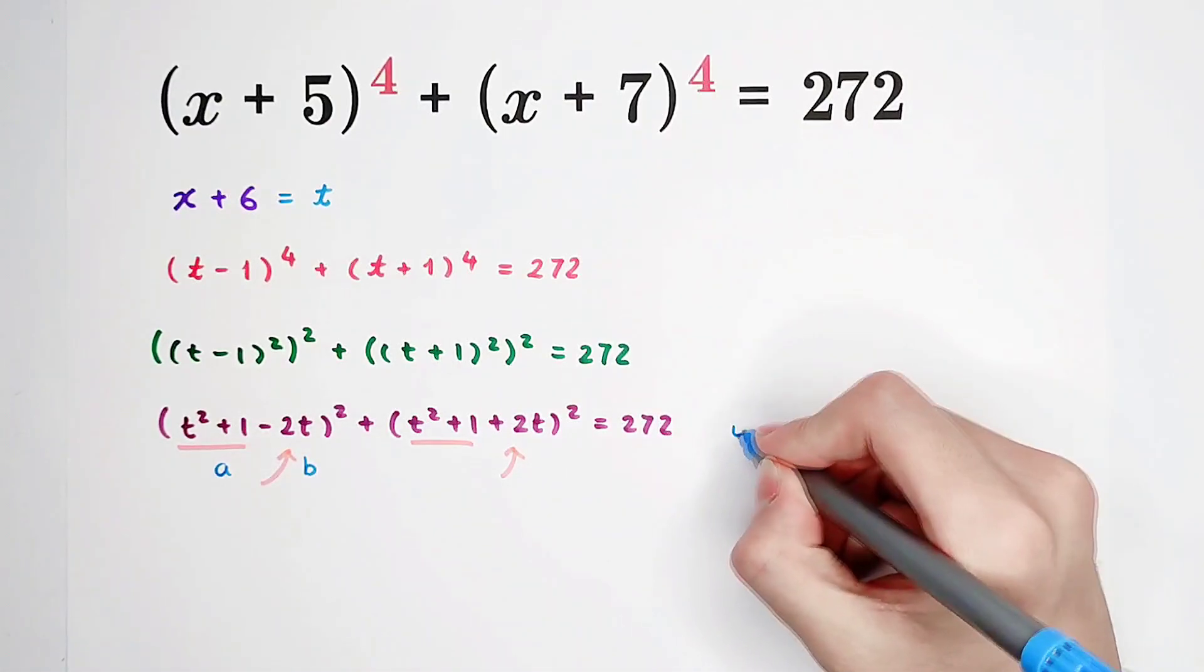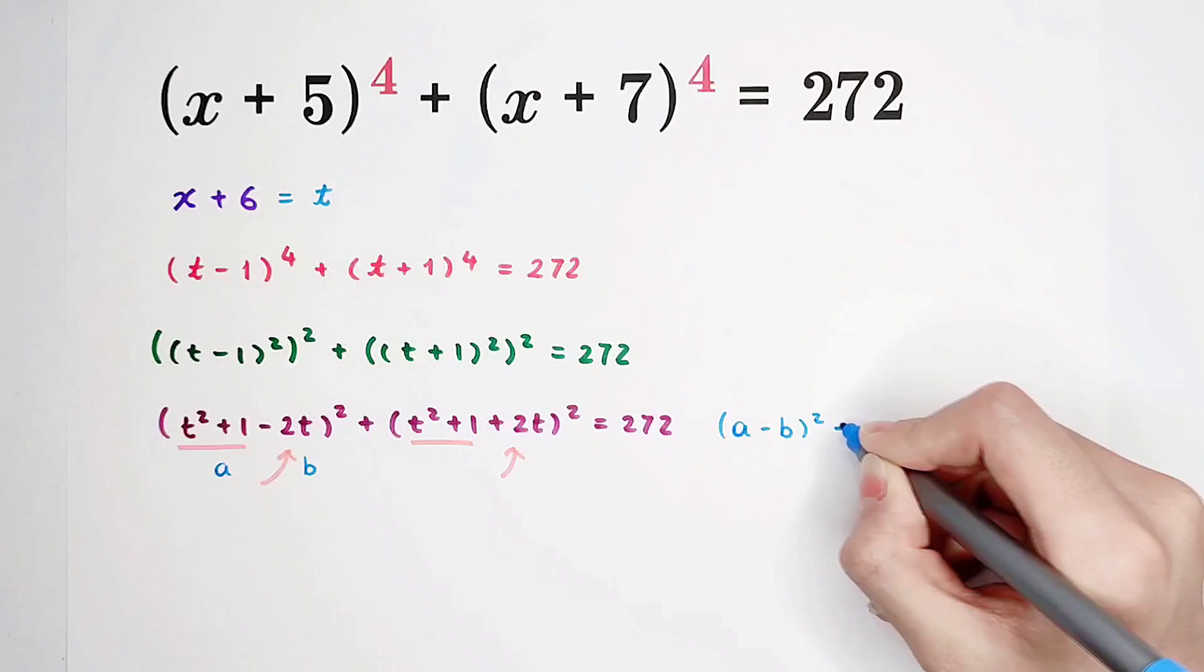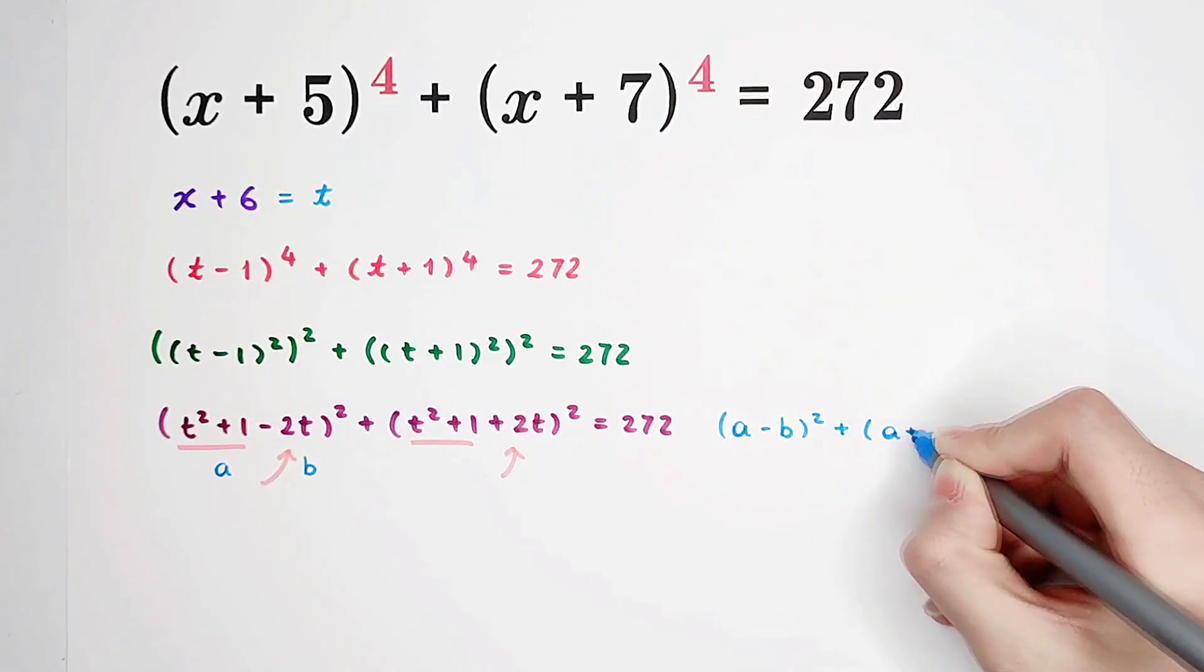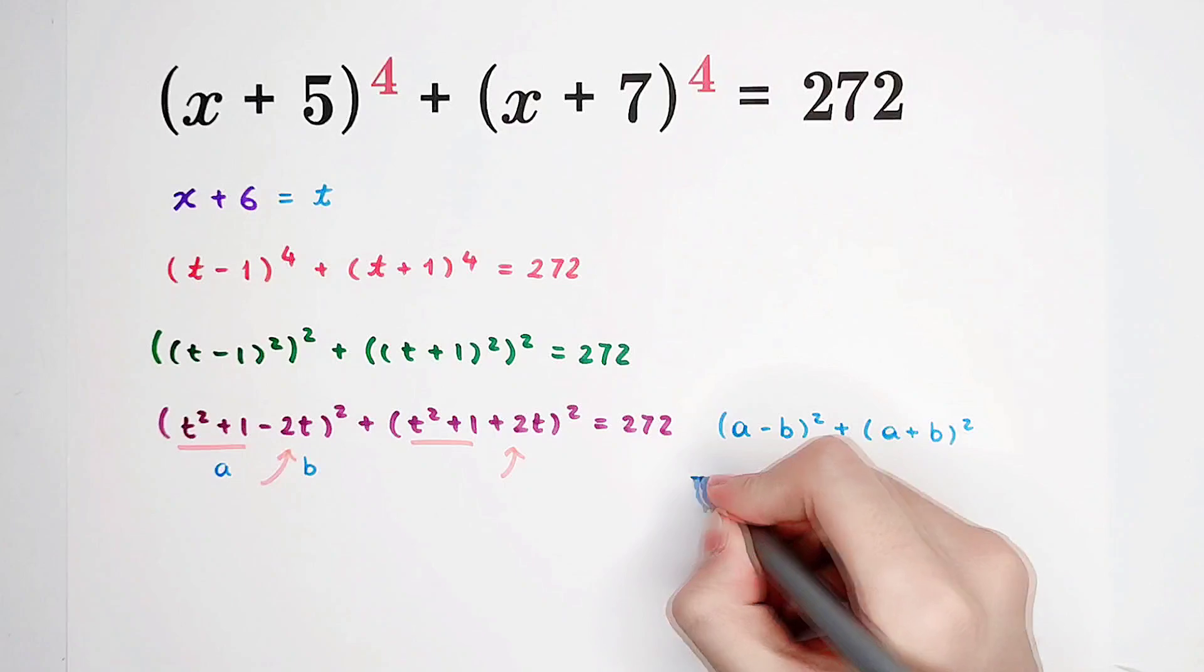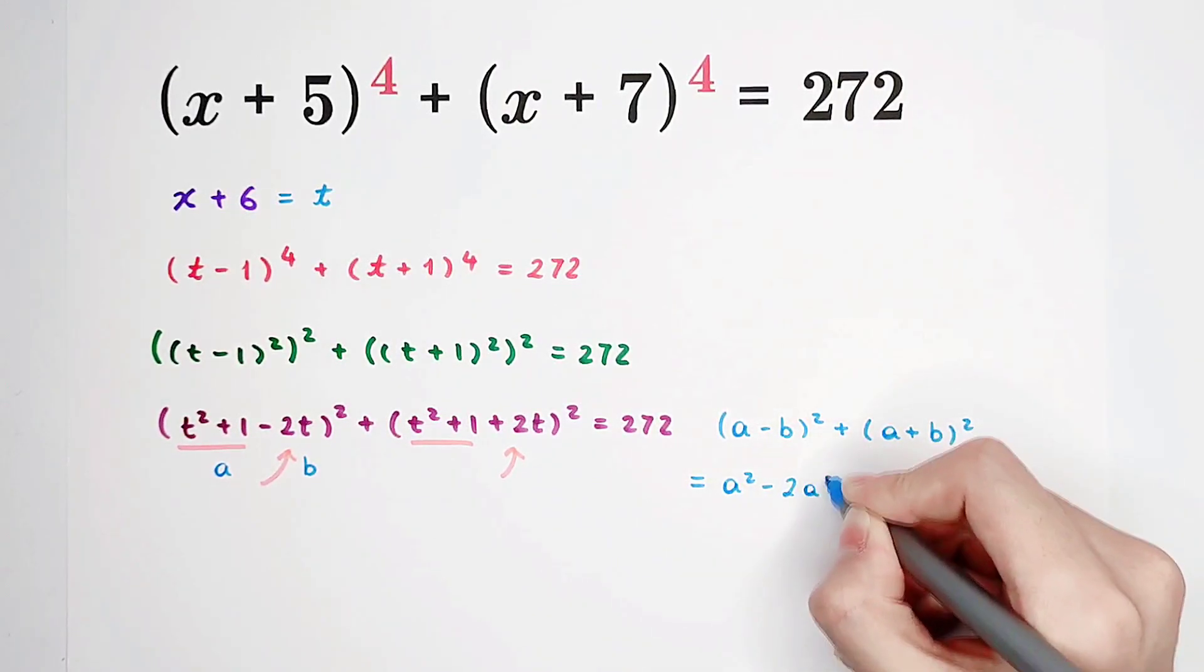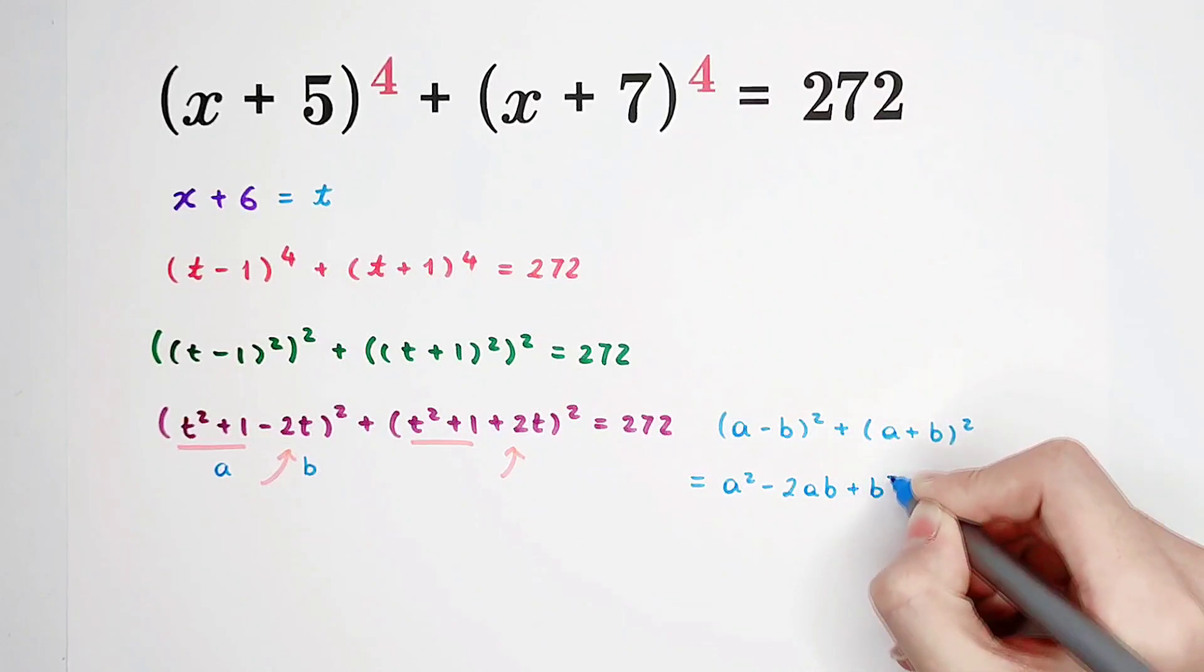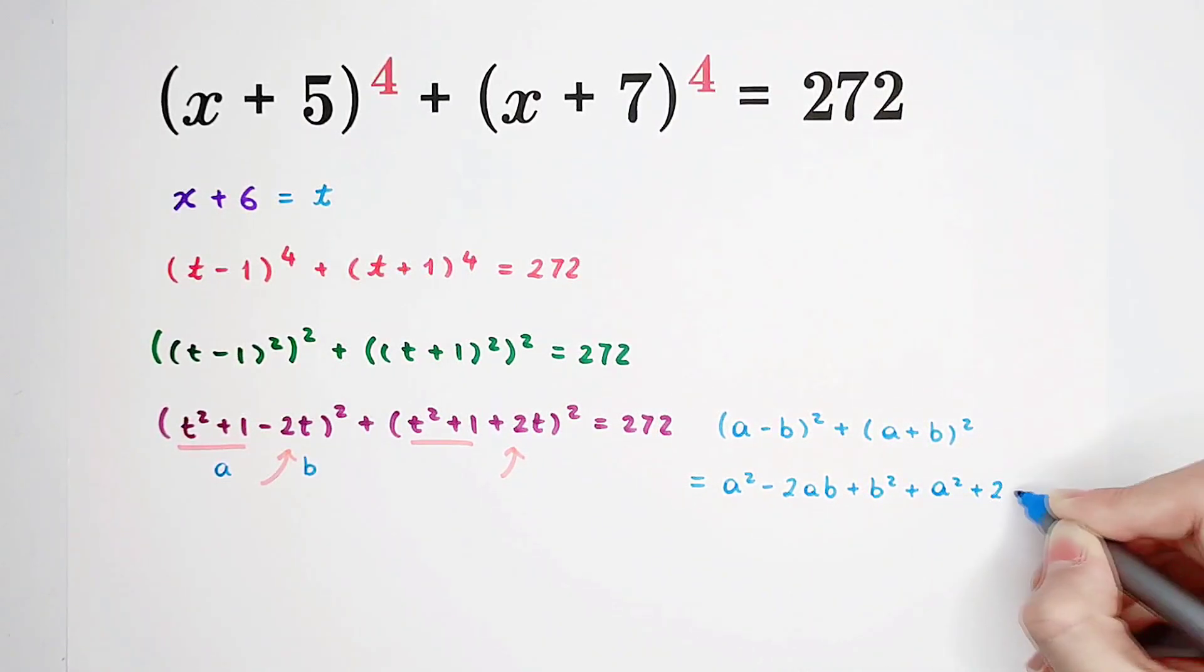the left side will be a minus b squared plus a plus b squared. How shall we simplify this? Not hard. a squared minus 2ab plus b squared plus a squared plus 2ab plus b squared.